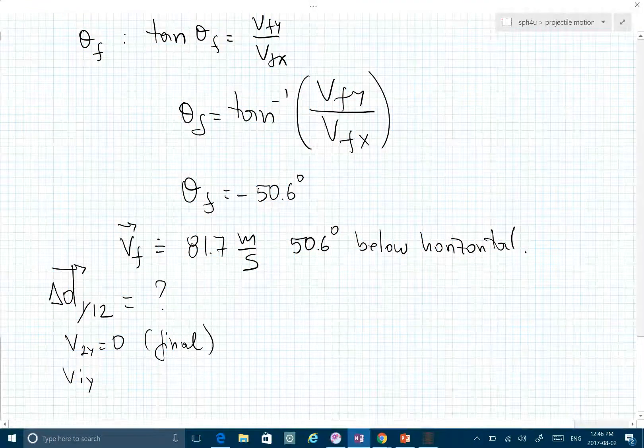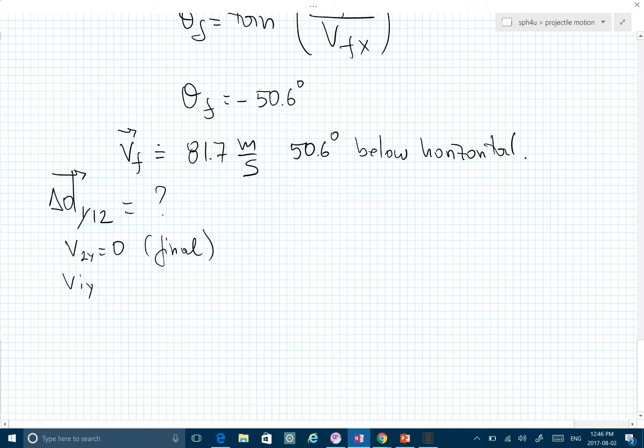What do we know? We know V2Y is 0 - the final velocity at the top. We know VIY is 39 meters per second, and we know the acceleration is negative 9.8 meters per second squared. We have three pieces of information, so we can use the final kinematic equation.